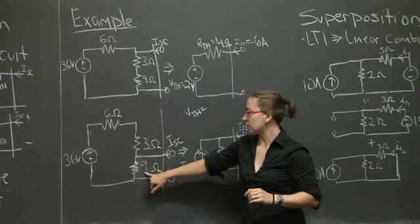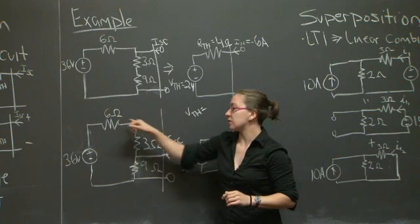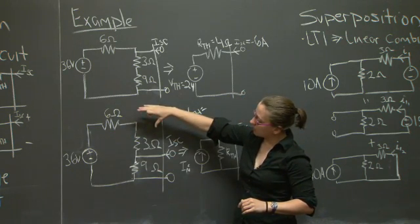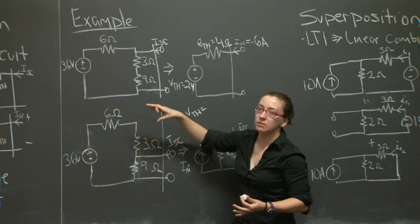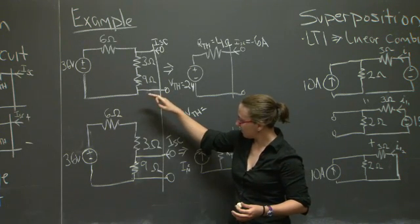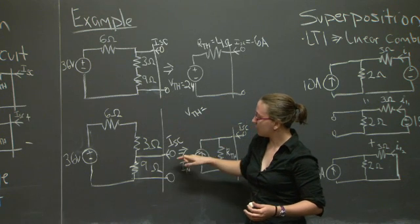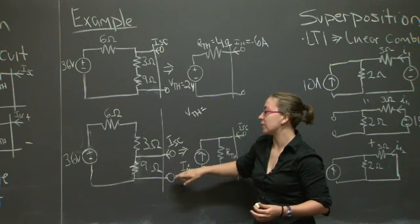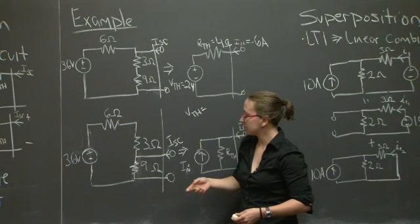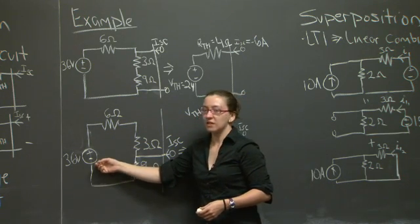The voltage drop across this resistor is determined by the fact that this is a simple voltage divider. The other resistors in this circuit sum to 9 ohms. So the voltage drop across this resistor is going to represent half of the total voltage in our circuit. That's 18 volts.